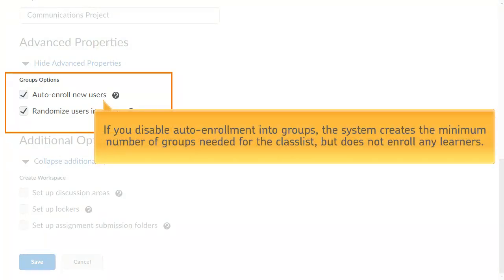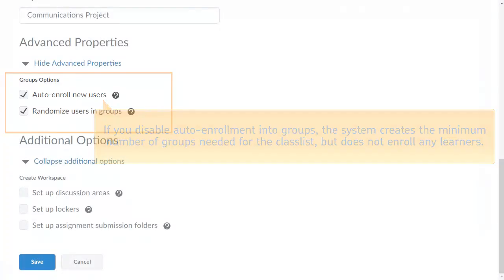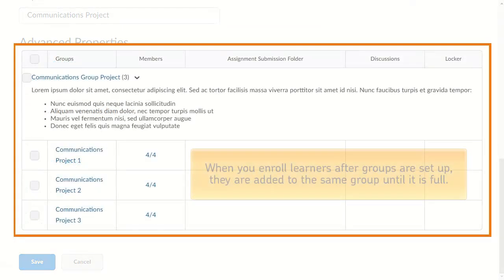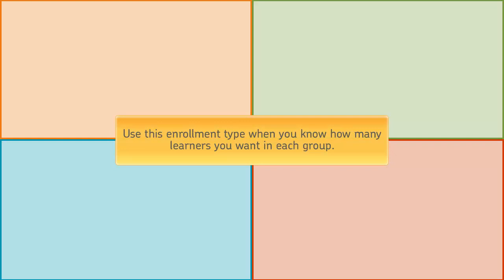All new learners are added to the same group until it is full. If you disable auto-enrollment into groups, the system creates the minimum number of groups needed for the class list but does not enroll any learners. When you enroll learners after groups are set up, they are added to the same group until it is full.